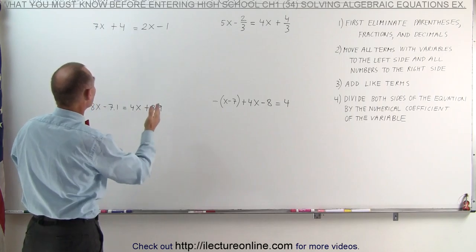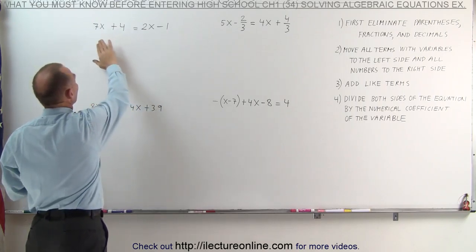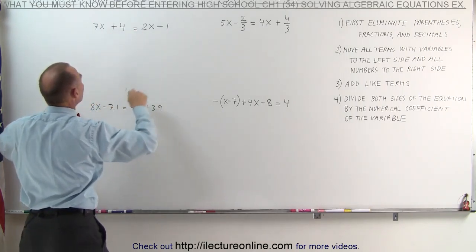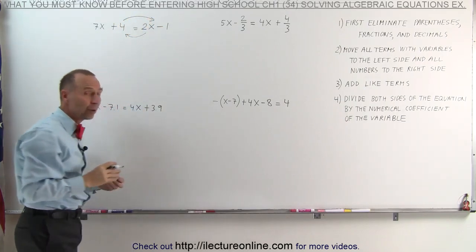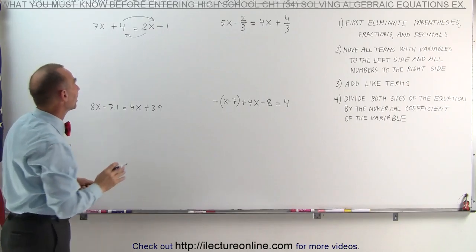We move all the terms with the variable to the left side equation and all the numbers to the right side, which means the 2x will move to the left and the 4 will move to the right. When we cross the equal sign, we change the sign.